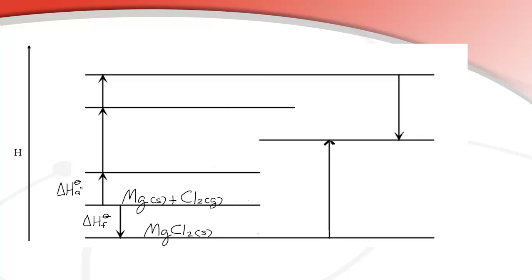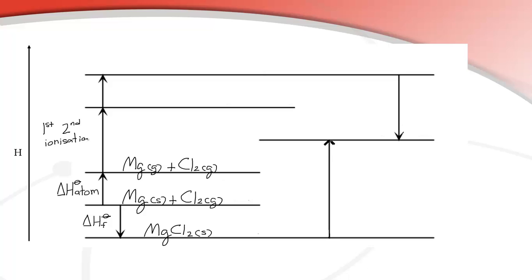The next thing we need to do is atomize the magnesium, because the magnesium needs to be a gas. So the delta H of atomization makes that solid into a gas. Next, we're going to ionize the magnesium — we need the first and the second ionization energy, because magnesium forms Mg²⁺. That gives us the Mg²⁺ ion as a gas, with chlorine gas still present.